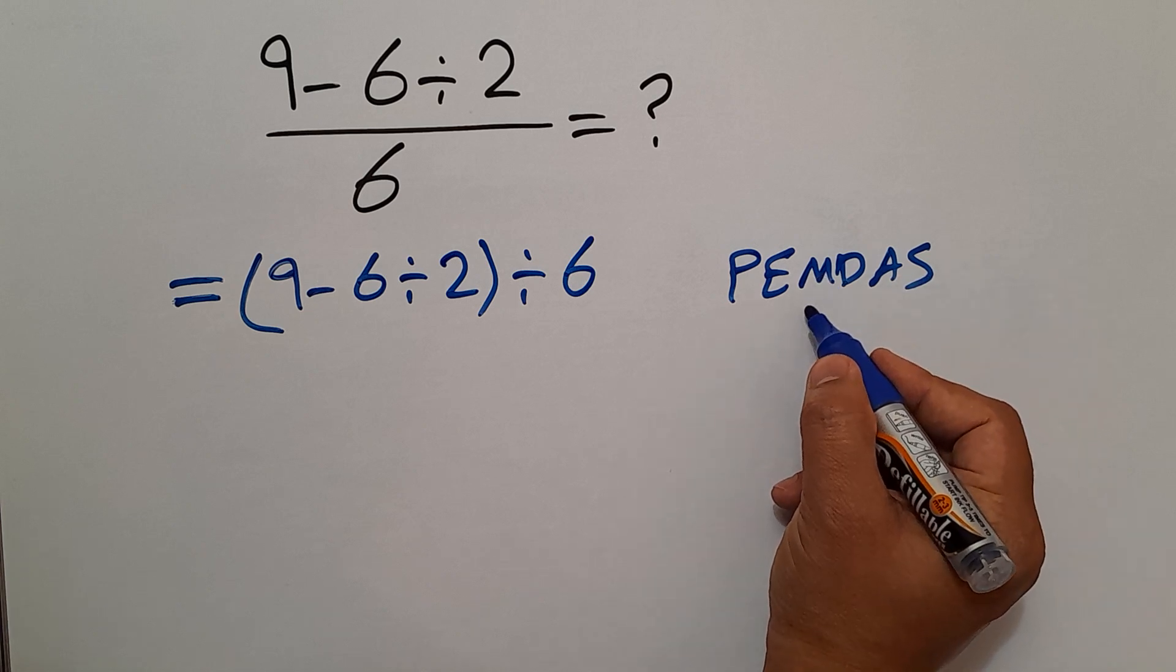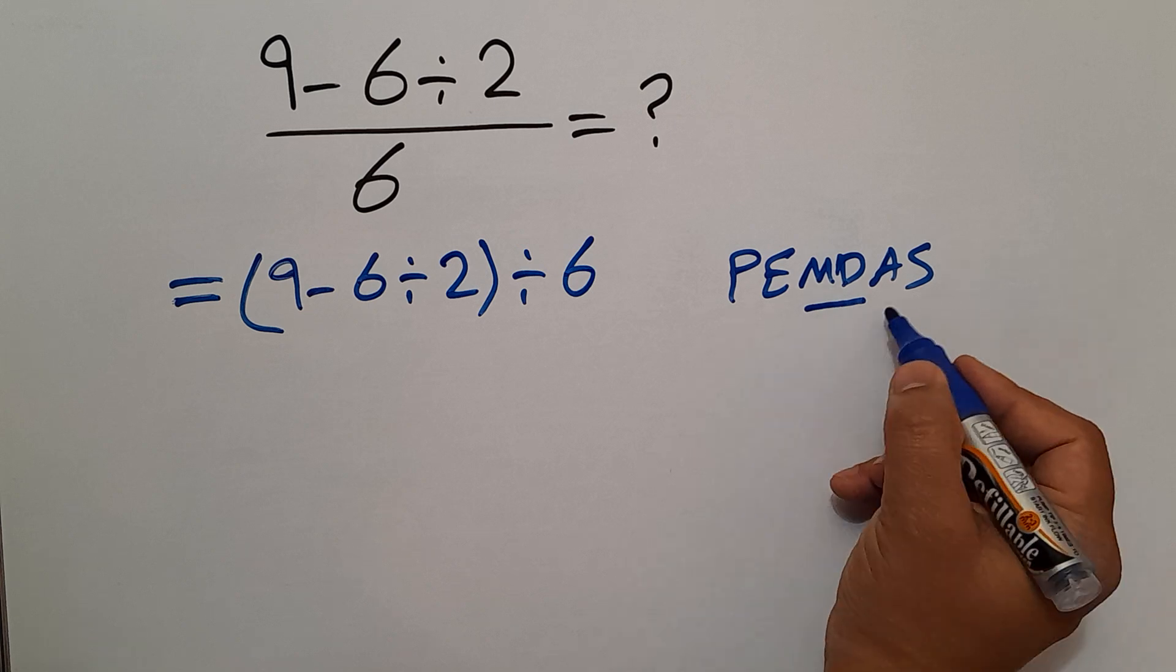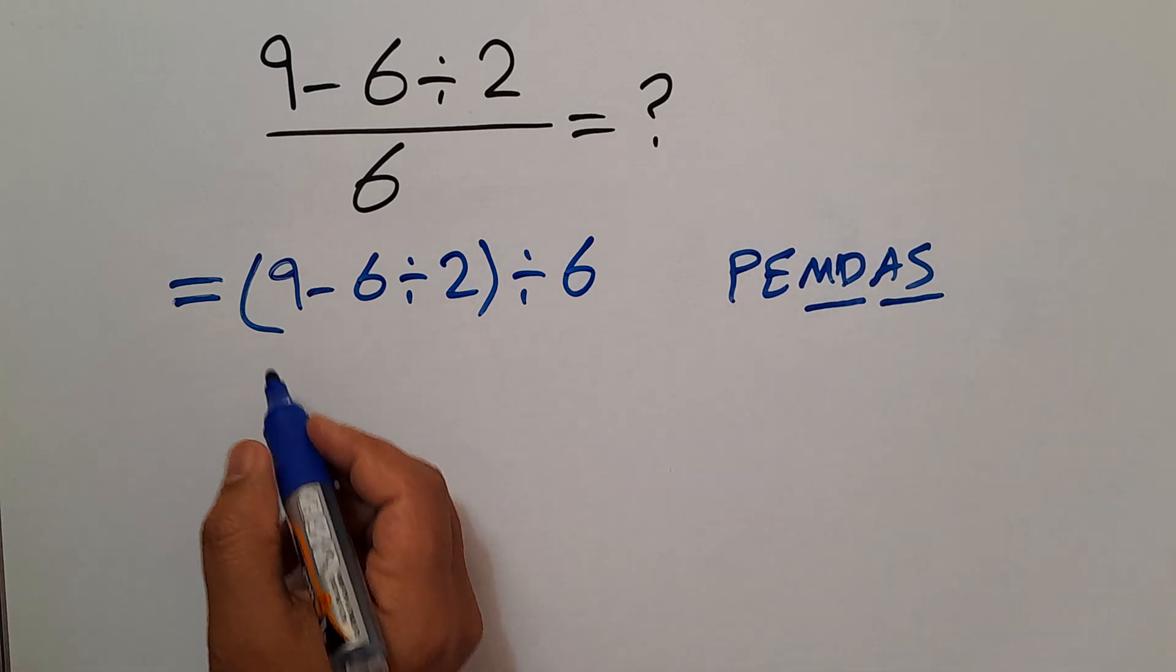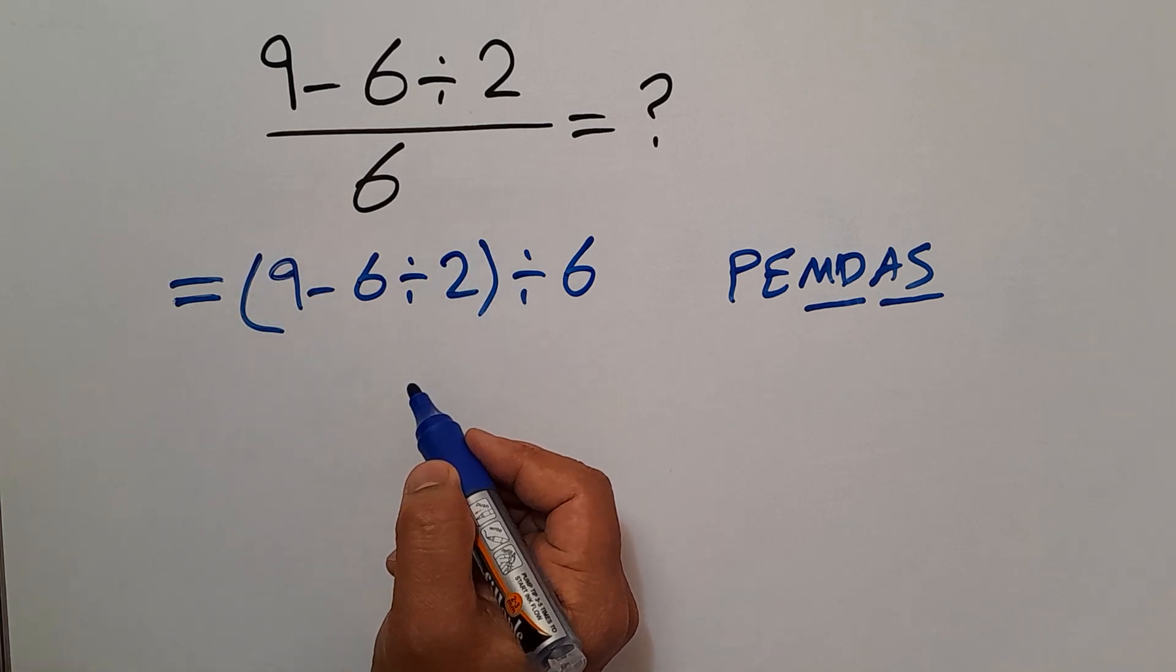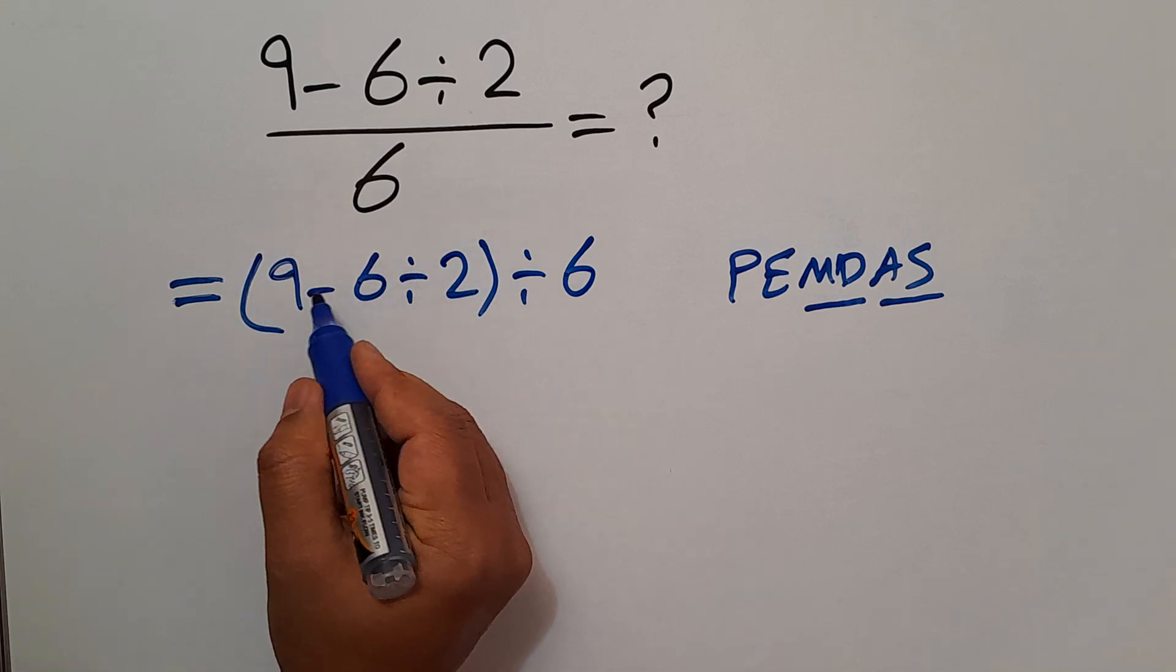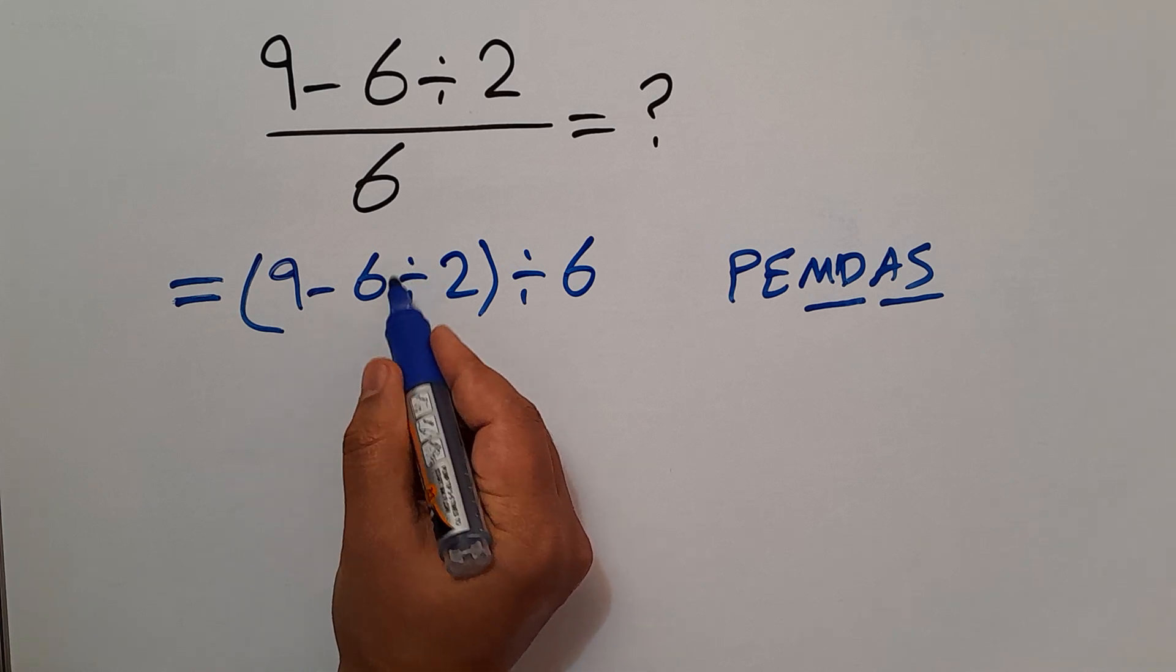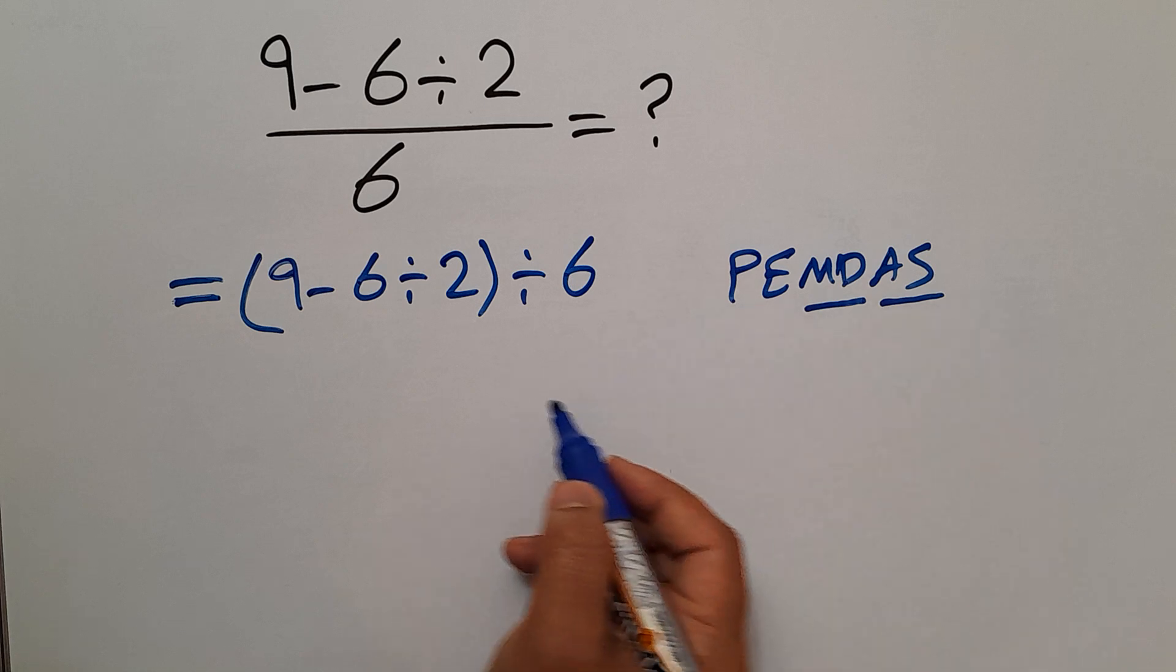Remember that multiplication and division have equal priority and we have to work from left to right. And the same applies to addition and subtraction. So here, first we do this parentheses. And inside this parentheses, we have one subtraction and one division. Division has higher priority than subtraction, according to PEMDAS.